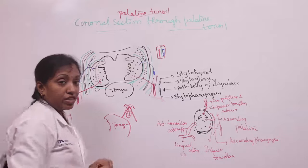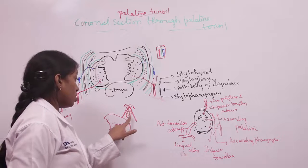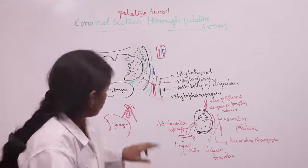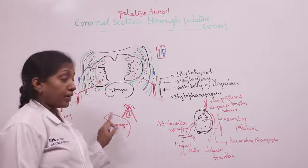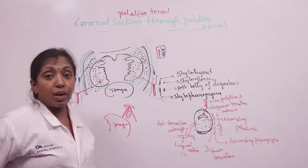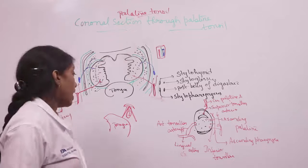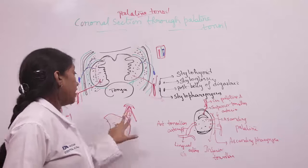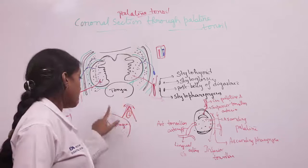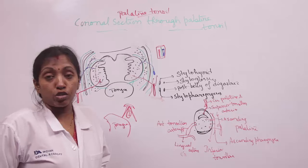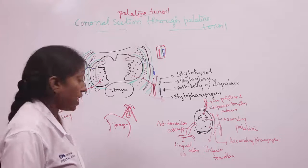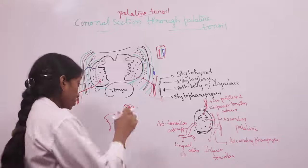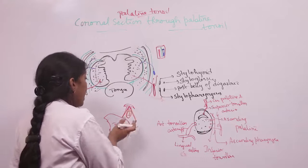These are the relations of the tonsillar fossa. The anterior relation is formed by the palatoglossal arch, which extends from the soft palate to the tongue. The posterior relation is the palatopharyngeal arch, extending from the palate to the pharynx. Above, the two arches meet at the soft palate, and below is the posterior one-third of the dorsum of the tongue.